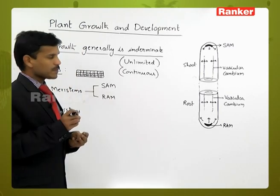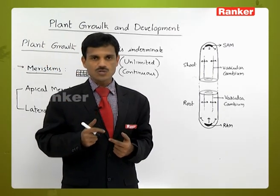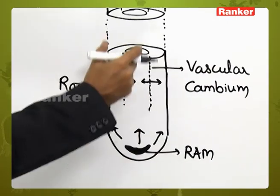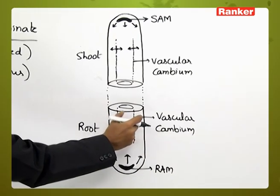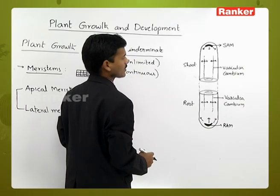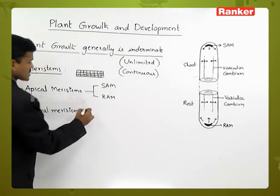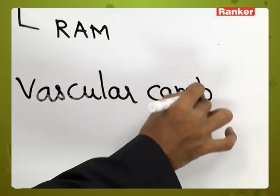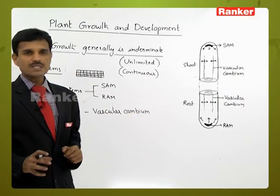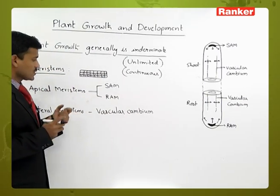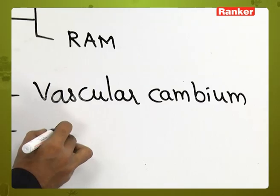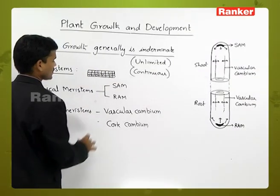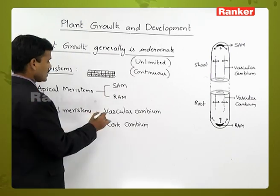The vascular cambium is a meristematic tissue present between the vascular tissues. It is present in the root system and shoot system of dicot plants mainly. The vascular cambium is one type of lateral meristem. During secondary growth, another lateral meristem is formed: the cork cambium. So cork cambium and vascular cambium are the lateral meristems.